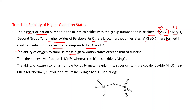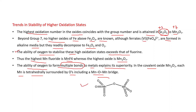An important point: the ability of oxygen to stabilize high oxidation states exceeds that of fluorine. For example, the highest Mn fluoride is MnF₄ (+4), whereas the highest oxide is Mn₂O₇ (+7). The reason is that oxygen can form multiple bonds but fluorine cannot. In the covalent oxide Mn₂O₇, each Mn is tetrahedrally surrounded by oxygen atoms including a Mn–O–Mn bridge, forming two linked tetrahedra sharing a common oxygen. Thank you.